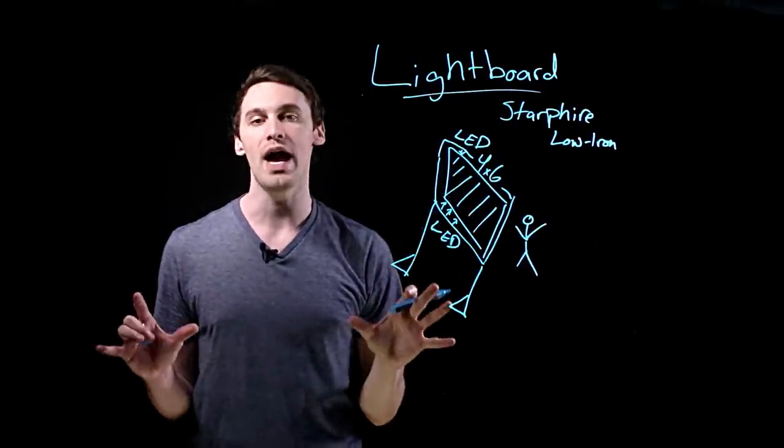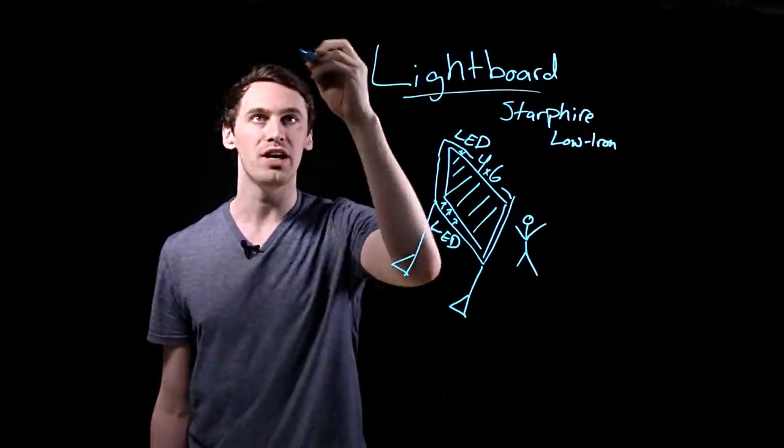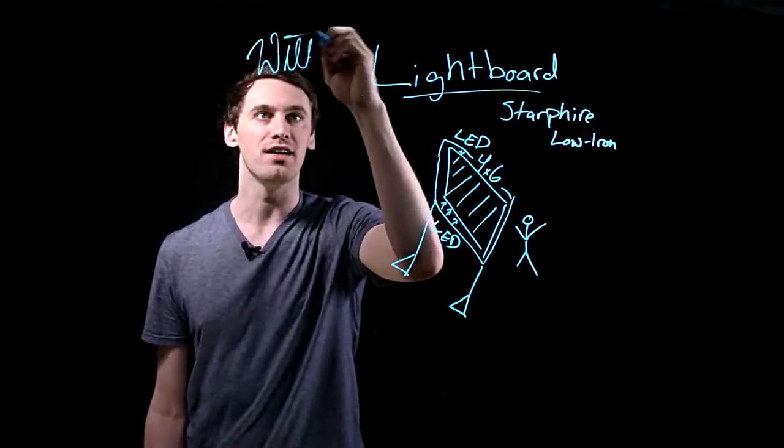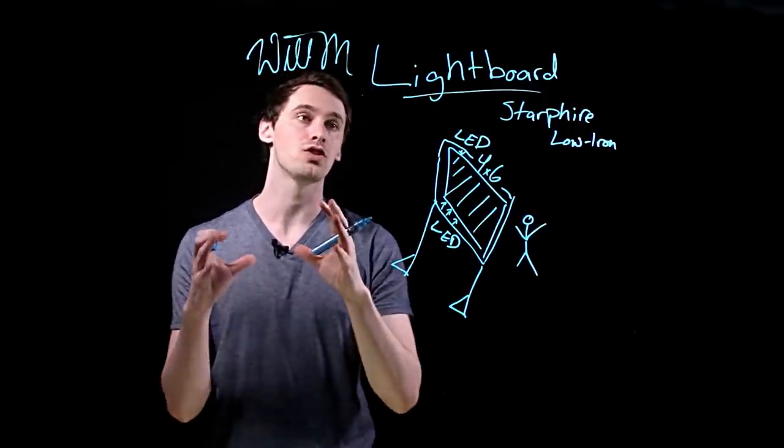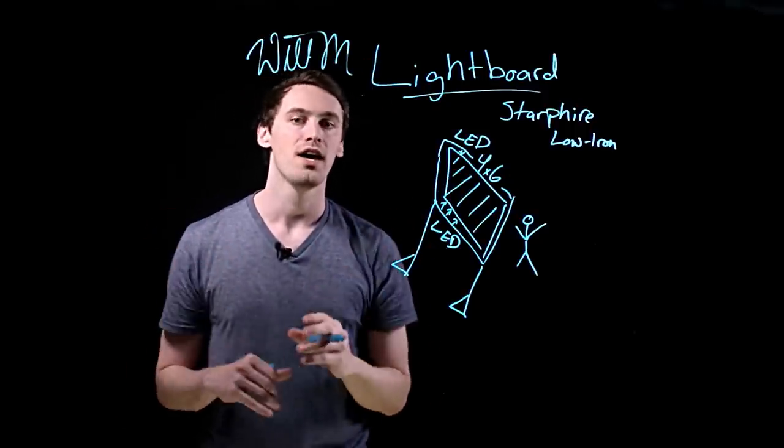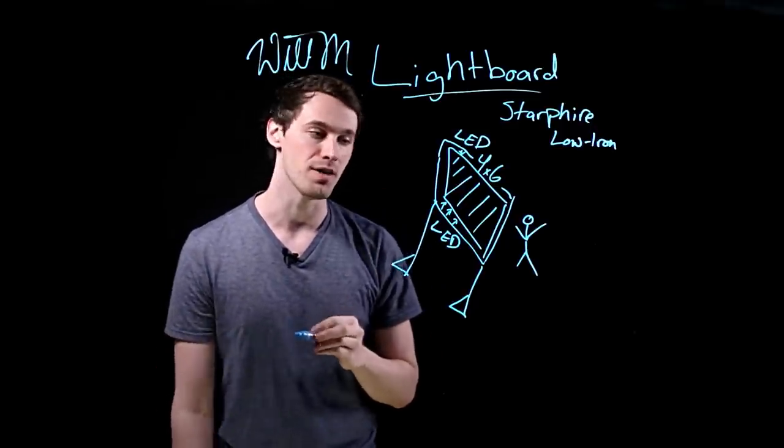Basically, the light gets trapped inside of the glass and whenever I write anything, it allows the light to exit through that pigmentation. So it really makes all of this writing just pop out and gives it this really nice neon effect as I'm drawing it.